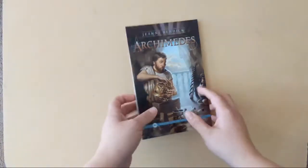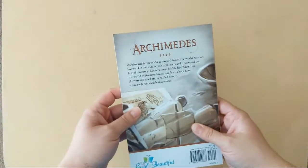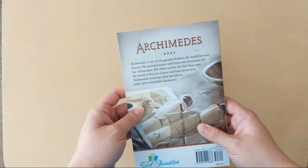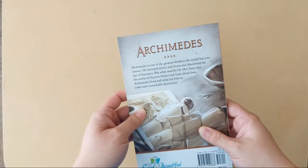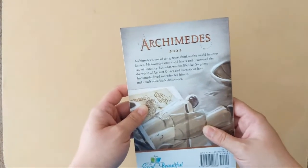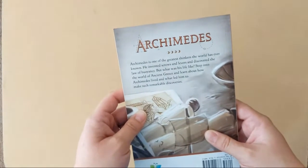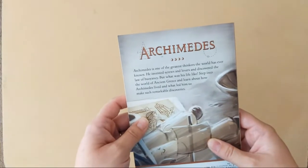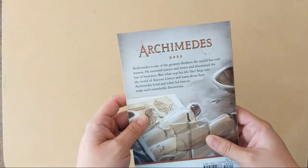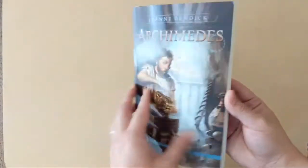Okay, now we're going to take a look at the chapter book. So I'm not going to flip through every page for you but we have Archimedes is one of the greatest thinkers the world has ever known. He invented screws and levers and discovered the law of buoyancy but what was his life like? Step into the world of ancient Greece and learn about how Archimedes lived and what led him to make such remarkable discoveries. That is really cool.